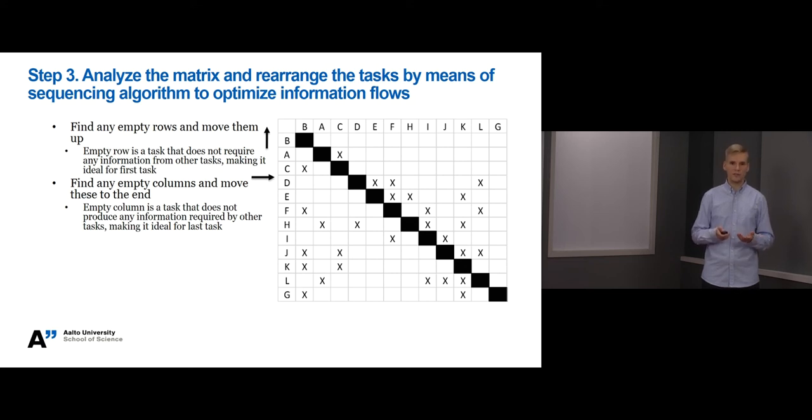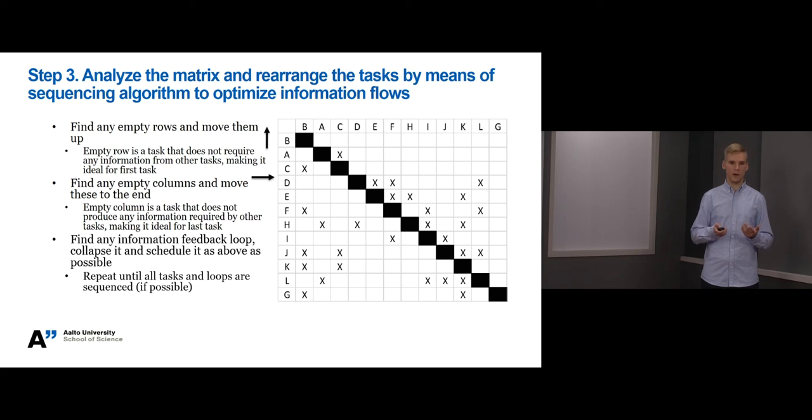The logic is that inputs are easier to capture than outputs. When we achieve a situation where the cross marks are below the diagonal, it means that all the tasks are sequenced. And as you remember from slide 4, sequenced tasks need only information from the previous tasks, having no feedback loops from successors, making the project more straightforward to execute. So how do we achieve this? Well first we try to identify any information feedback loops between tasks. Then we move the tasks that cause information feedback loops as upfront as possible in the matrix to eliminate or minimize information feedback loops. We repeat this until all tasks and loops are sequenced if possible. So in practice this is a kind of an iteration exercise.